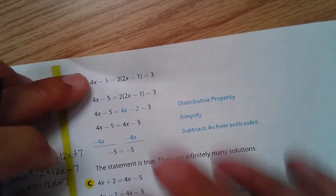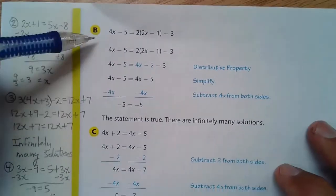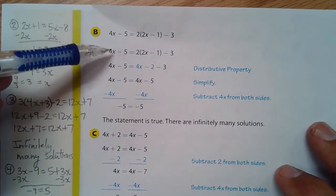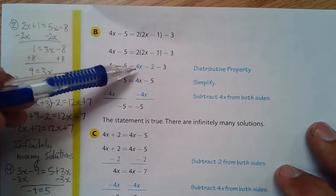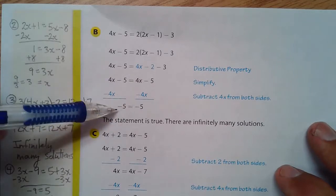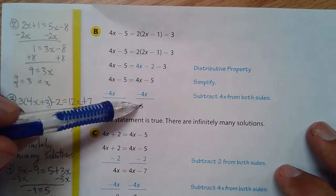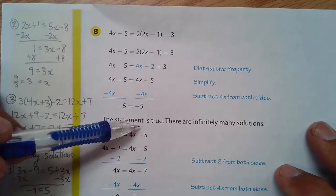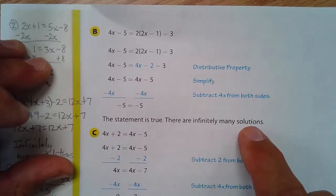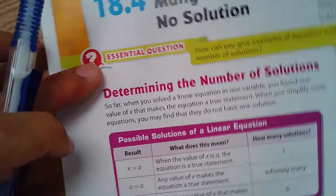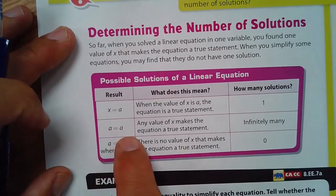On the next one, we have this. When you solve the equation, distribute the 2, collect like terms and such, you have negative 5 equals negative 5. And this is a true statement, and there are infinitely many solutions. This is the situation of infinitely many solutions.